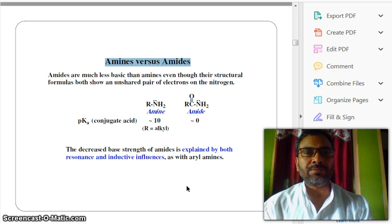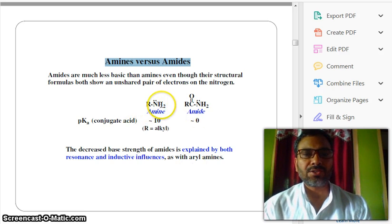Today, in this video, I am going to talk about amines versus amides. Amides are much less basic than amines, even though their structural formulas both show an unshared pair of electrons on the nitrogen. You can see here, RNH2 and RCONH2. This is amine and this is amide.